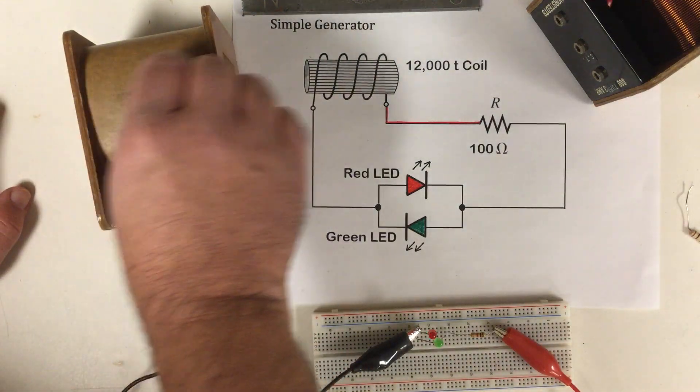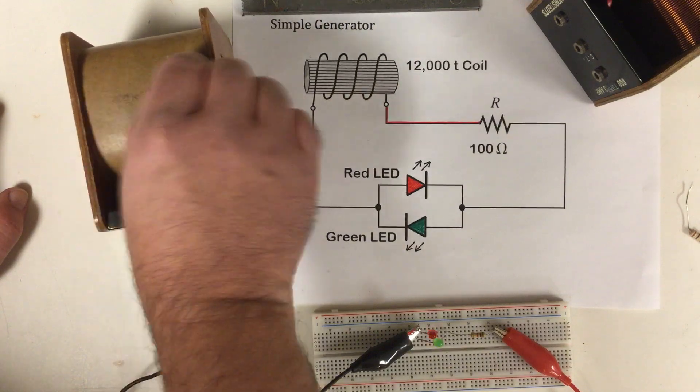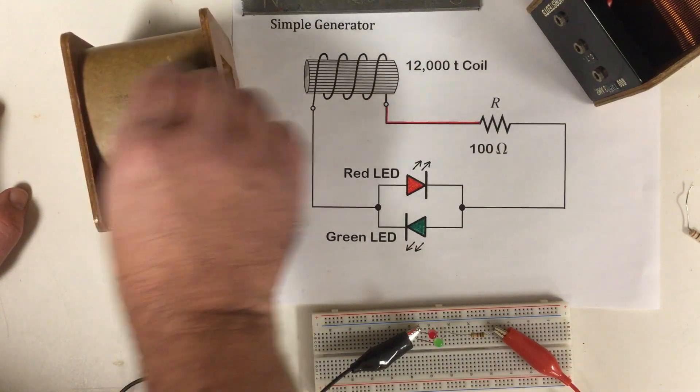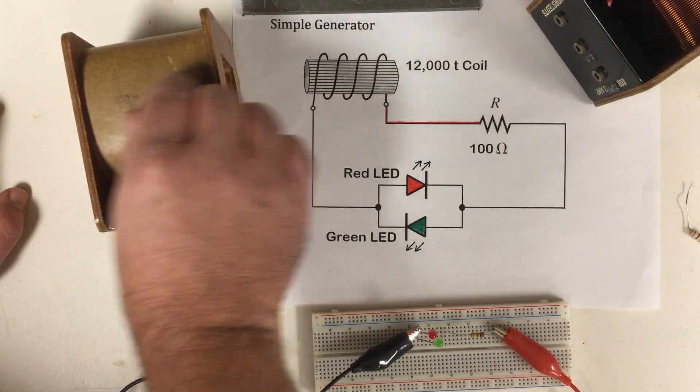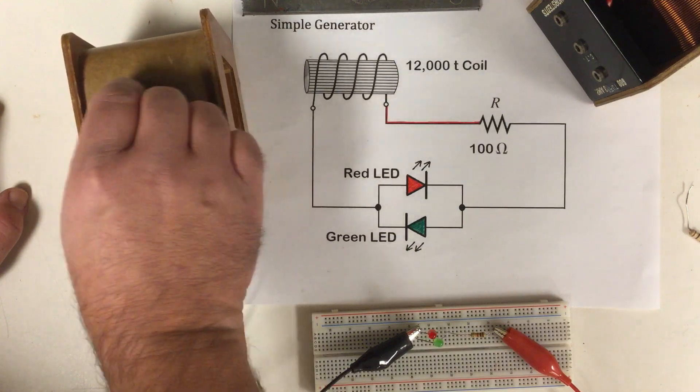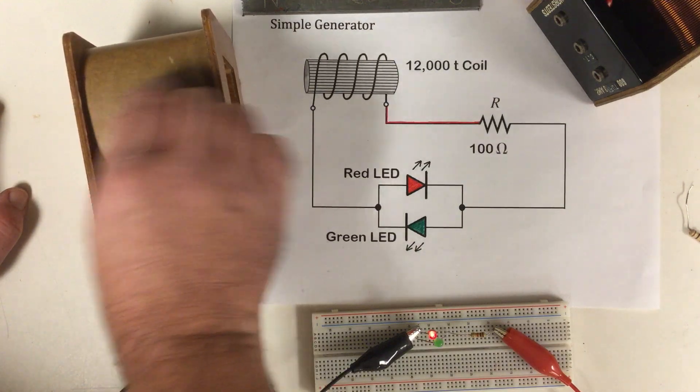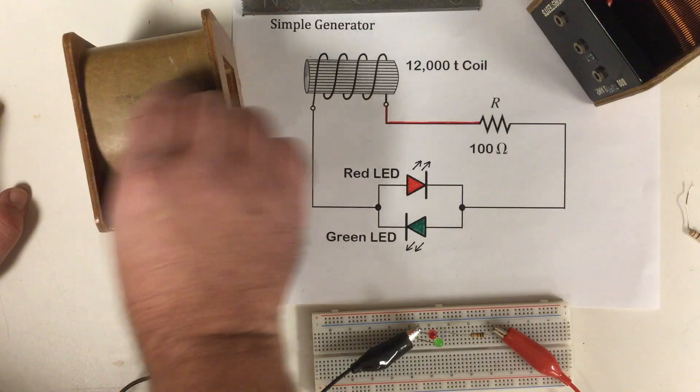And you can see I have to go a whole lot faster to get back to a brightness. But if I go slow, well, the green one doesn't even really want to light up much at all. I really have to pick up speed to get them to come.